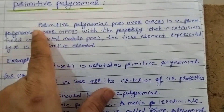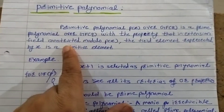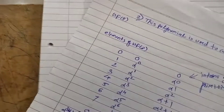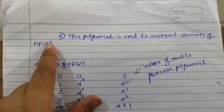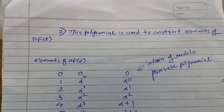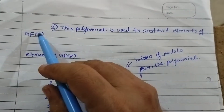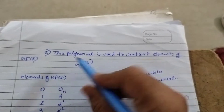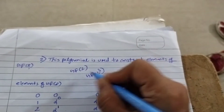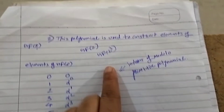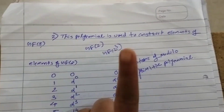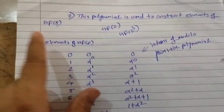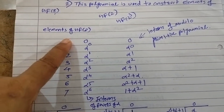The first criterion is fulfilled. Now, with the property that in the extension field constructed modulo p(x) the field element represented by x is a primitive element — let us construct GF(8) from GF(2). GF(8) is GF(2³), the extension field of GF(2). We construct the elements of GF(8) using the primitive polynomial x³ + x + 1.